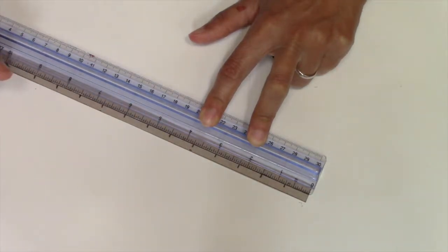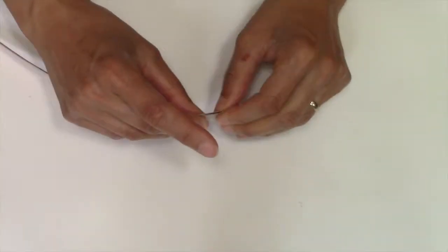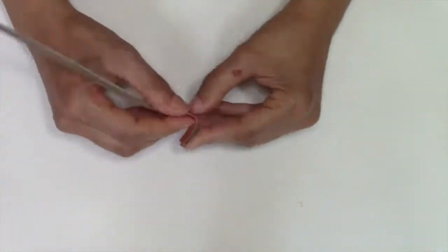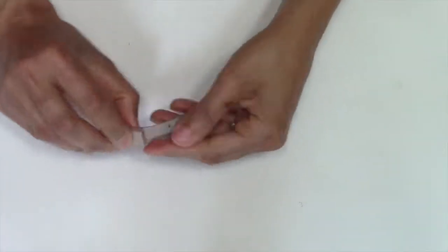The total length of this strip will determine the number of teeth you end up with. Now start folding back and forth like you're making a paper fan. I'm using my nail to help me get the folds right on the lines.